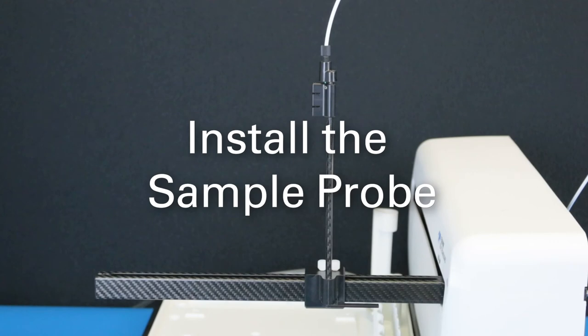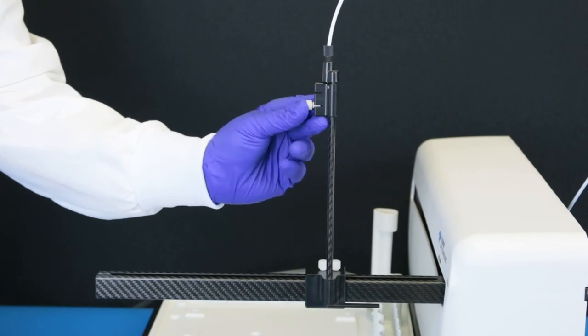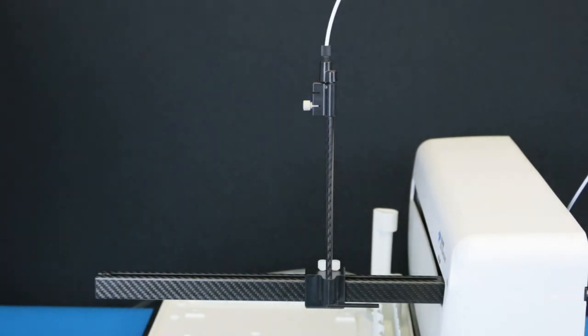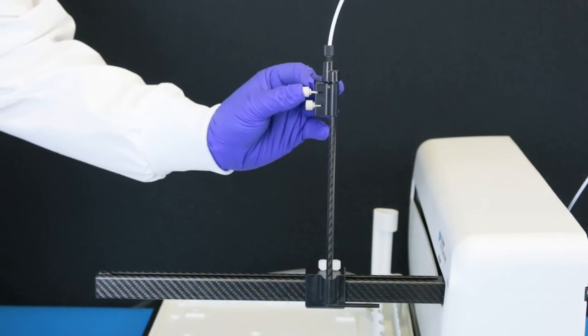To install the sample probe, insert the probe clamps into the z-axis slider. You may need to loosen the nuts on the clamps before installing the probe.